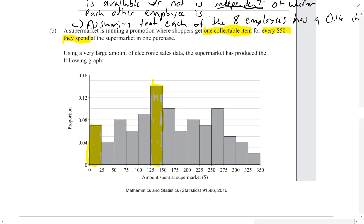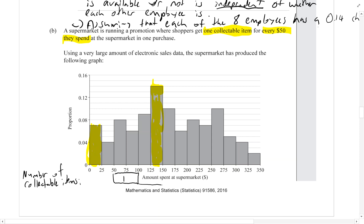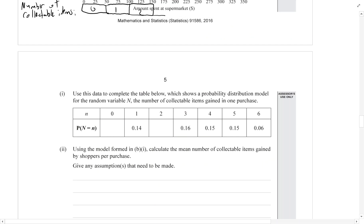You get one collectible item for every fifty dollars you purchase, so if you purchase twenty-five dollars — or even forty-nine dollars — you get nothing. If we put a scale underneath: zero collectible items for anything less than fifty dollars, one item for fifty through to one hundred, two for one hundred to one fifty, and so on.